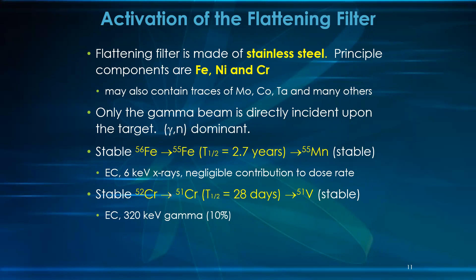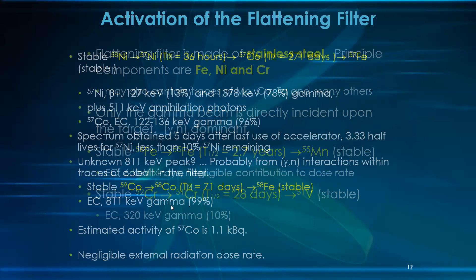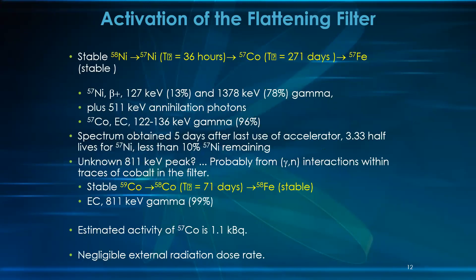Stable chromium also becomes radioactive with a half-life of 28 days. More detail about these activities can be reviewed. The conclusion is a negligible external radiation dose rate, with an estimated cobalt activity of 1.5 kilo electron volt background.